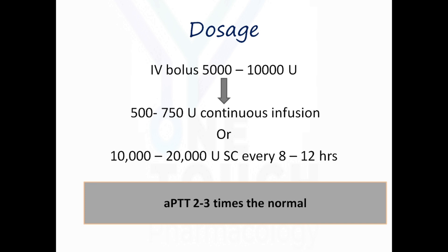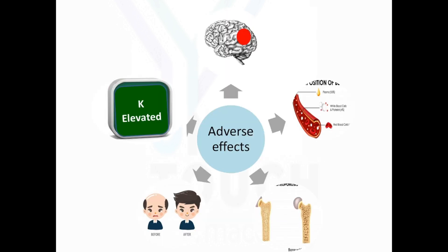Heparin is monitored by APTT. The APTT has to be two to three times the normal to attain the therapeutic level. The most common adverse effect of heparin is bleeding, which is an extension of its therapeutic action.